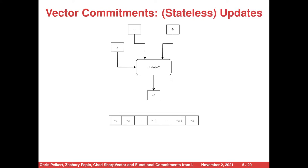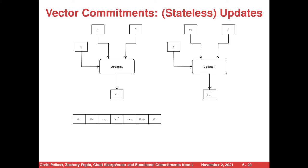An additional property one might want from vector commitment schemes is what we call stateless updates — algorithms that allow you to update commitments and proofs to reflect changes in the underlying vector. Our algorithm for updating commitments takes in the old commitment c, an index j, and a delta between the old message entry m_j and the new message entry m_j prime, and outputs a new commitment c prime to a new vector m prime, which is equal to the old vector with its j-th entry replaced by m_j prime. By analogy, we have a similar algorithm for proofs that takes an old proof p sub i and the same j and delta, and outputs a new proof p sub i prime that works for the new vector m prime.